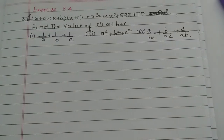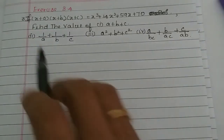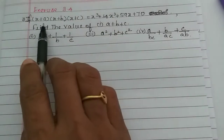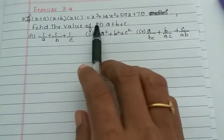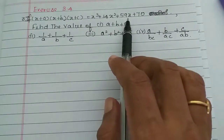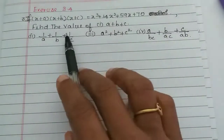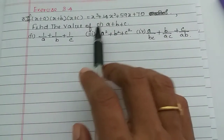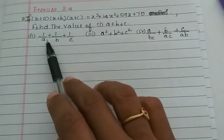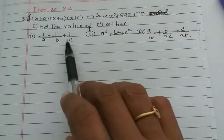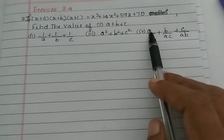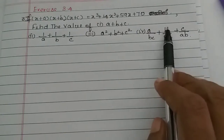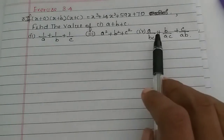Hi students, in this video we have exercise 3.4. If (x+a)(x+b)(x+c) equals x³ + 14x² + 59x + 70, then find the value of: a+b+c, then 1/a + 1/b + 1/c, then a² + b² + c², then a/bc + b/ac + c/ab.